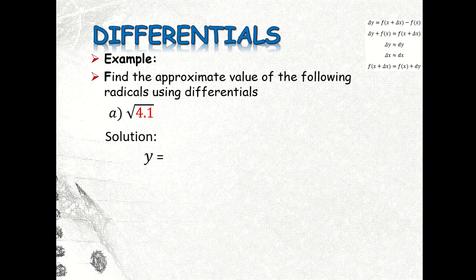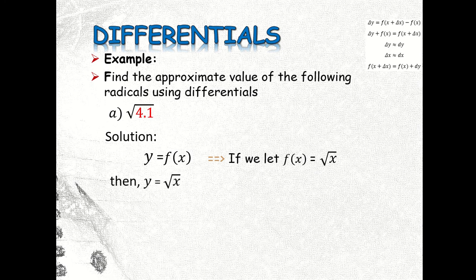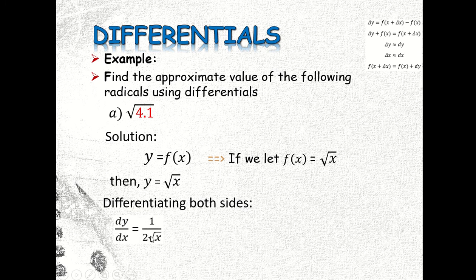First, we let y equal to f of x. If we let f of x equal to the square root of x, then we have y equal to square root of x. Differentiating both sides — we express this in terms of original exponents and apply the power rule — we get dy over dx equal to 1 over 2 times square root of x.